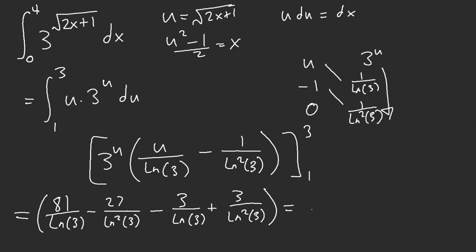So our answer would come out as... So 81 minus 3. I cannot do that in my head for some reason. But I'm guessing it's 78. And then minus 27, 24 over ln squared of 3.